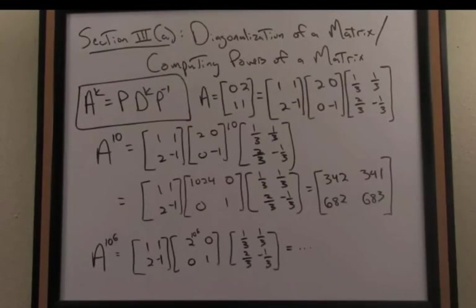In a more extreme case, if I wanted to compute A raised to the 10 to the 6th power, in other words A to the millionth power, I can obviate the need to directly do those millions of computations involving the dot product by first diagonalizing and then raising my diagonal matrix to that appropriate power and appending that new matrix by P and P inverse on either end.